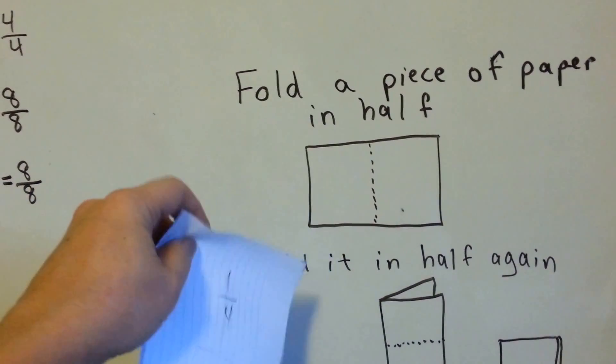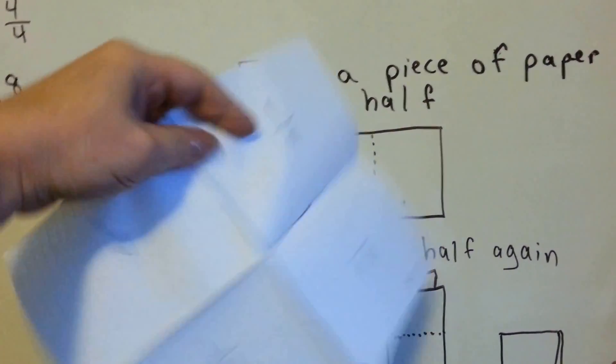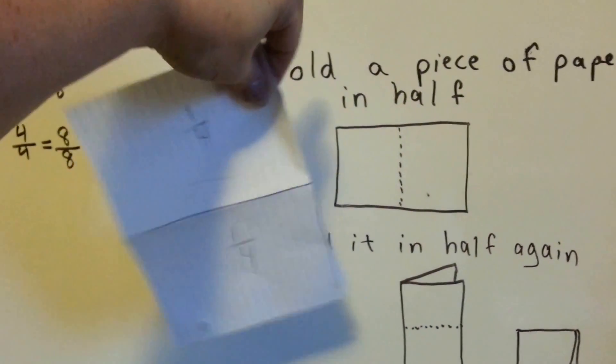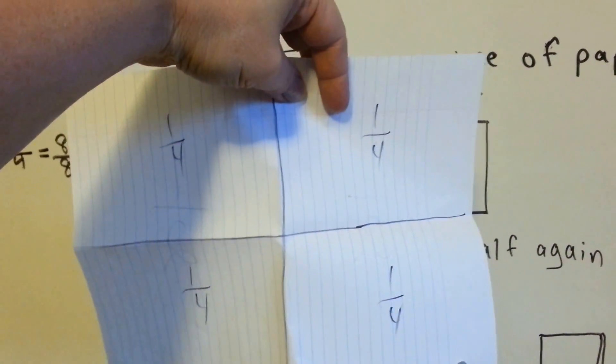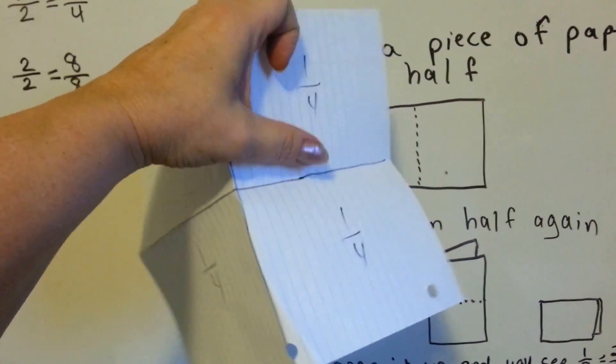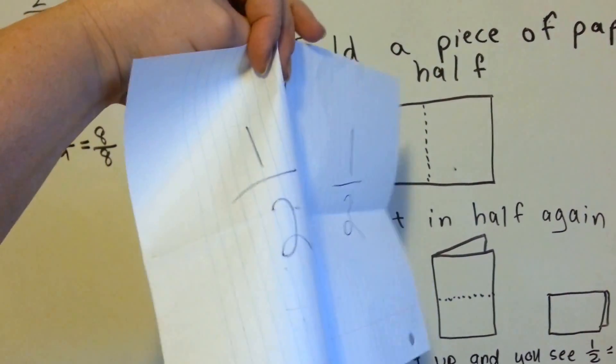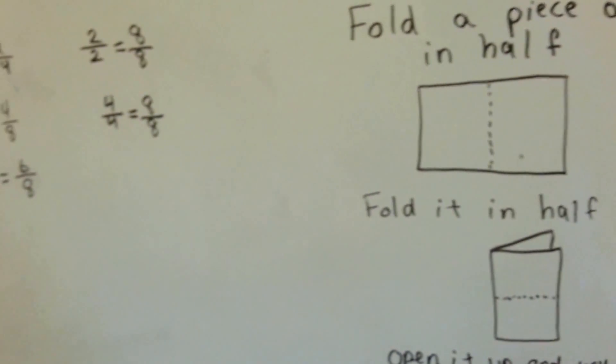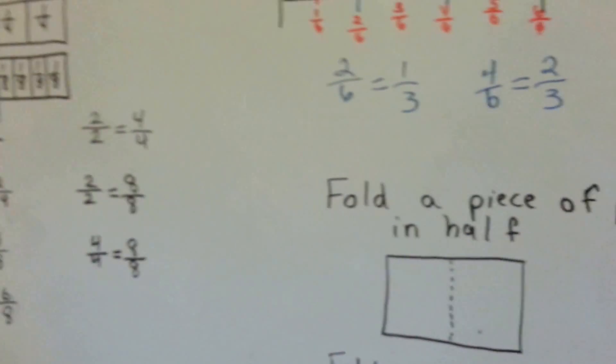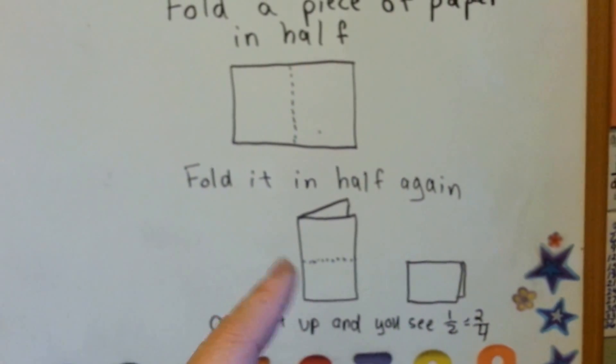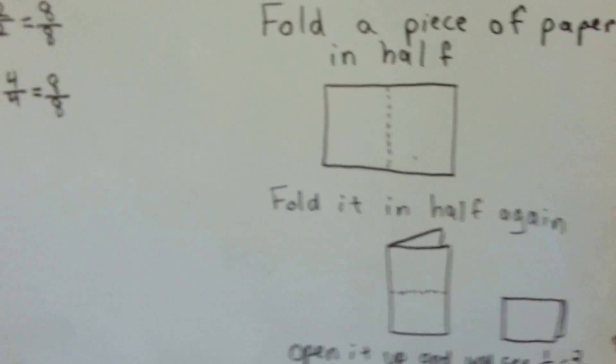Now when you open it up, let's see if I can do this with one hand, we've got fourths. This is half. These are fourths. These two fourths right here on this side are equal to a half. See how that works? So two fourths are equal to one half. You can do that yourself. Two fourths and one half is the same thing.